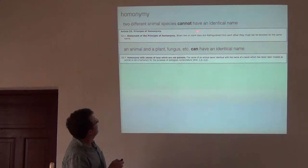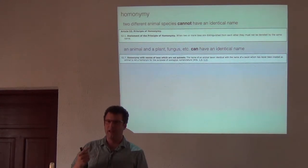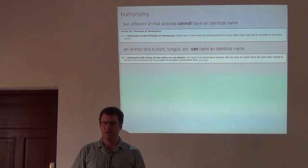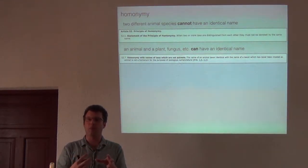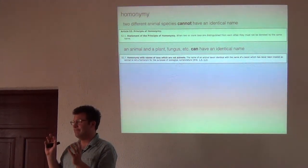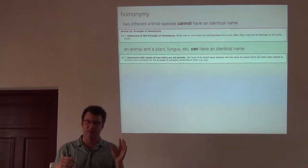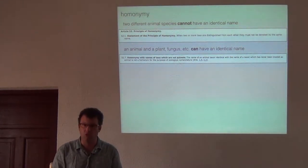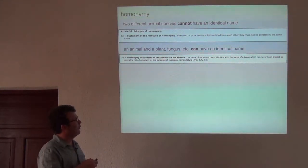Eric talked about homonymy. Animal species can't have the same name, and you find this problem across animals, plants, and fungi. I also work with fossils, and fossil animals cannot have the same name as living animals — there's a single code relevant to animals whether extinct or alive. So we have cases where paleontology literature has a name that's the same as, say, a beetle. One of those has priority as the senior homonym; the other is the junior homonym. Just because it's a dinosaur and a beetle, that's still a problem.